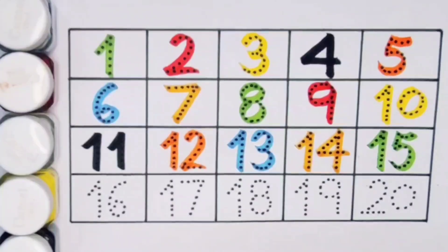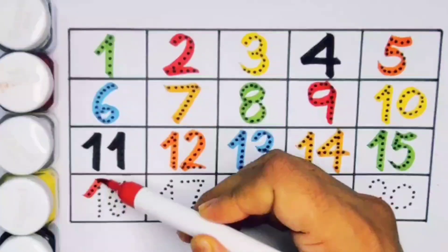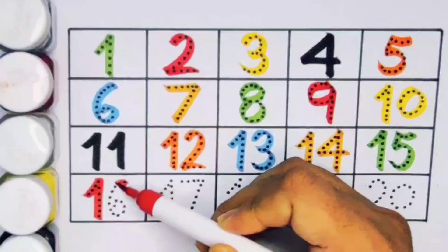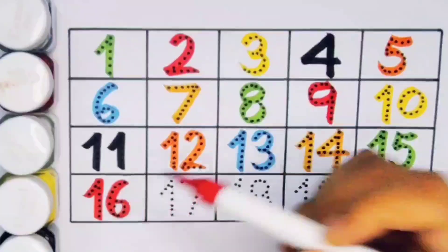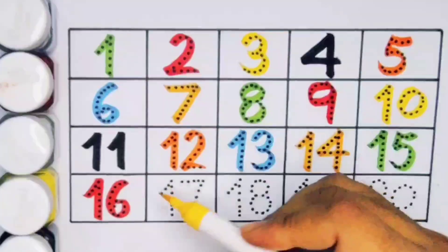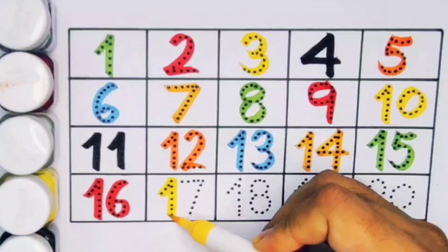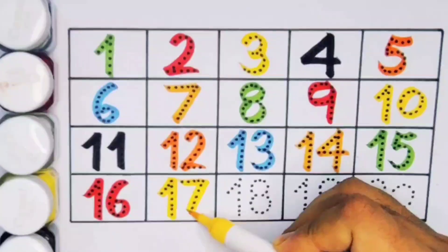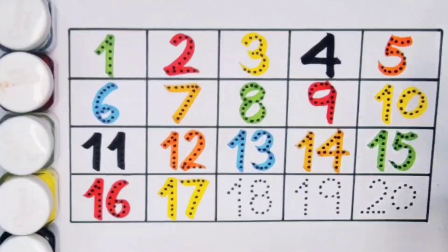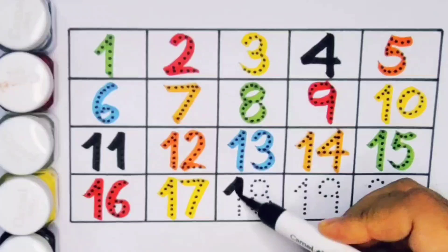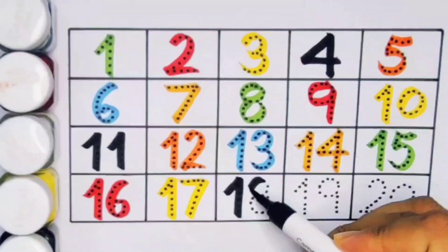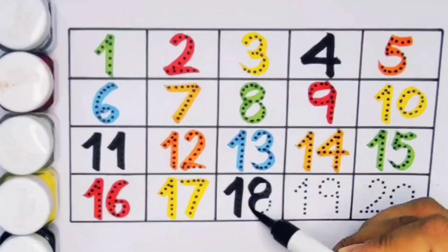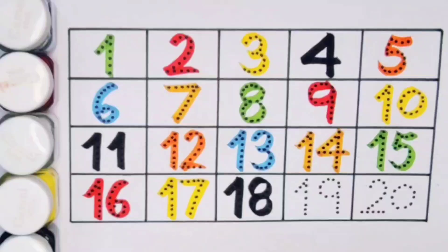Next kids, sixteen, one six, number sixteen. Next kids, seventeen, one seven, number seventeen. Next kids, eighteen, one eight, number eighteen.